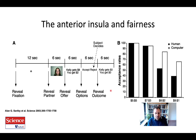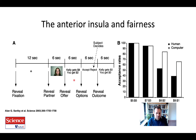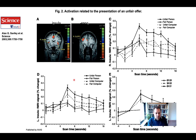An alternative explanation is that it's affect-driven — that being treated unfairly actually triggers an emotional response such as anger, disgust, or some moral outrage, that leads you to reject the offer. We can't really dissociate this in this game because we're not measuring the fairness perception of the offer specifically. But what we can look at is the neural responses.